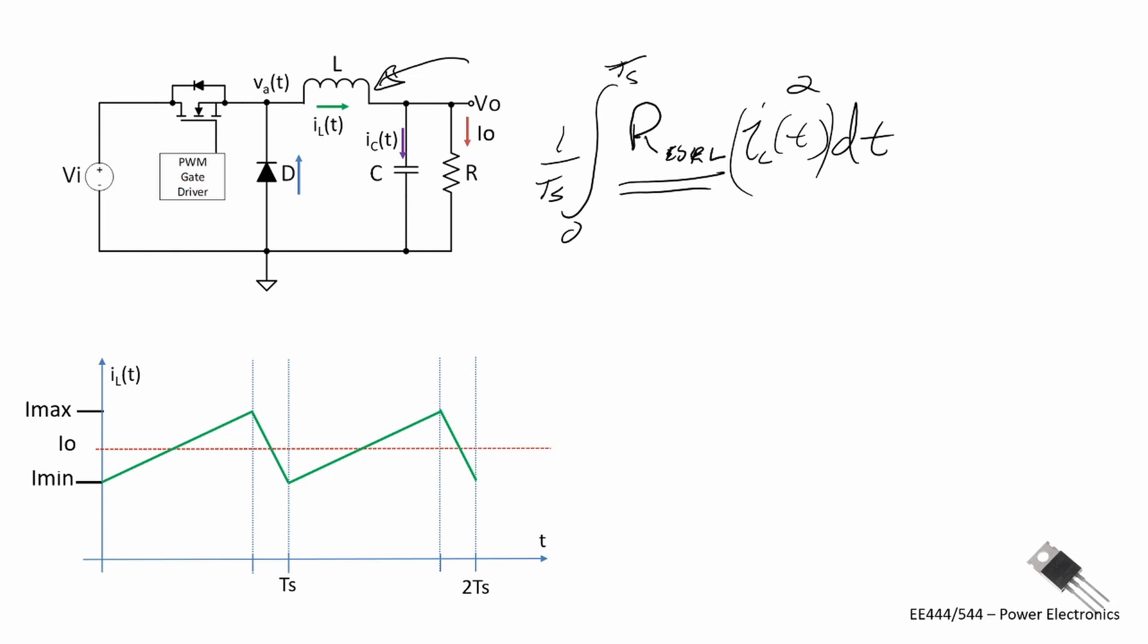There's actually two parts to this loss. One part is due to the average, which is I naught, as you can see that average, and that is the main component. Another one is due to the ripple. And there's an RMS value associated with that ripple. And I'm just going to write the equation. And this is the power loss equation in the inductor.